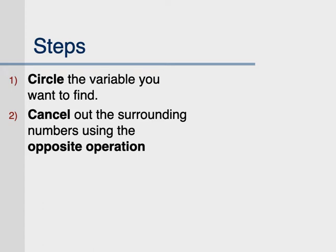Copy down these steps. Step 1: circle the variable you want to find the value of. Step 2: cancel out the surrounding numbers using the opposite operation.